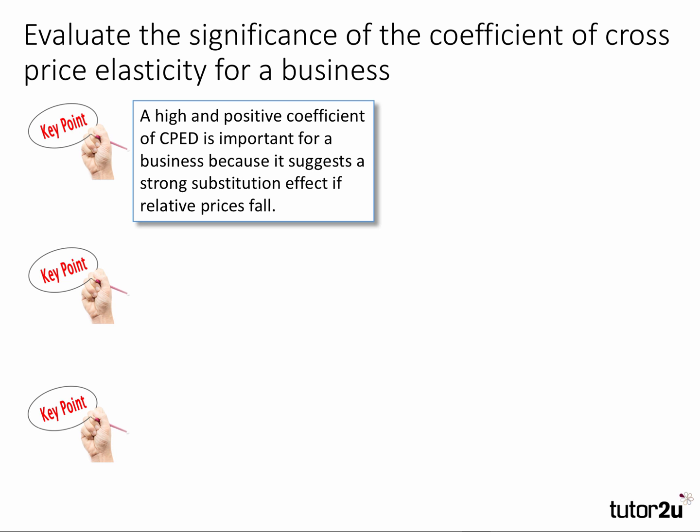The first point is that if cross price elasticity has a high and positive coefficient, that's important to a business because it suggests a strong substitution effect if relative prices fall. Don't forget: for two substitutes, the cross price elasticity is always positive.